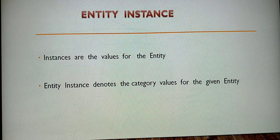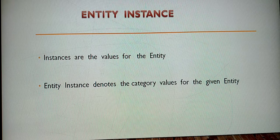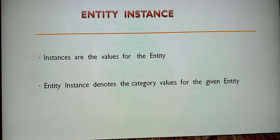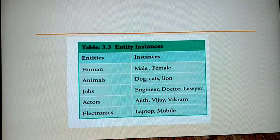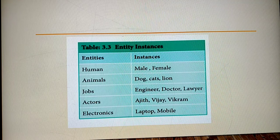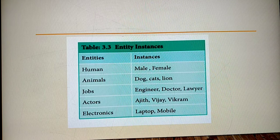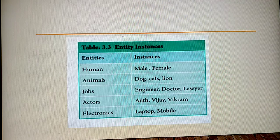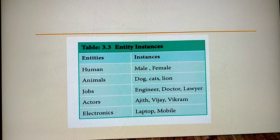Entity instance represents the values or categories of an entity. For example, under the category 'Animals' you have dog, cat, lion. Under 'Jobs' you have engineer, doctor, lawyer. Under 'Electronics' you have laptop and mobile. The entity acts as a category and the instance acts as a value.